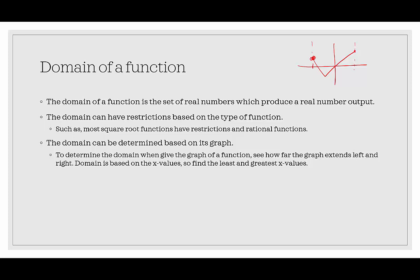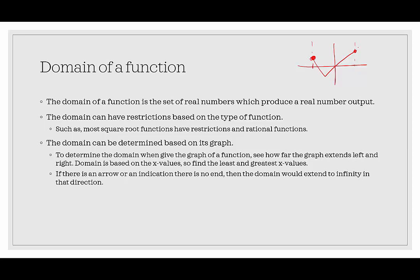When we represent domain, we use brackets and parentheses. If the endpoints are included, we use brackets; if the endpoints are not included, we use parentheses. If there is an arrow or an indication that there is no end, then the domain extends to infinity in that direction. We look for very definite endpoints. If a graph fills the entire viewing window with no endpoints shown, we assume it extends indefinitely in both directions because there's no indication it stops where our viewing window stops.